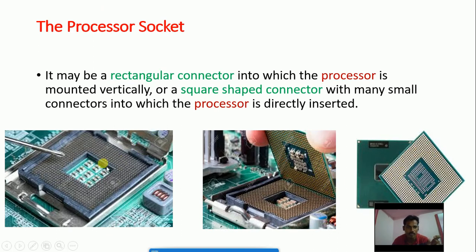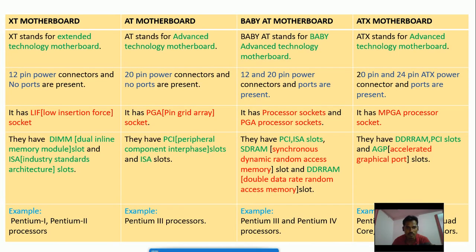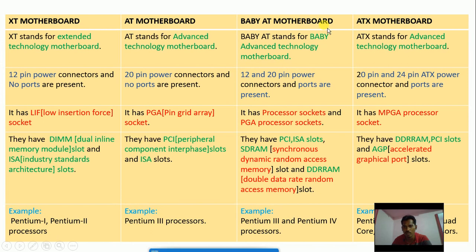The socket is where we place and mount components, and slots are where we insert cards into the PCB. For the AT motherboard, it has a PGA socket - Pin Grid Array socket. The Baby AT motherboard also uses a PGA processor socket. The ATX motherboard uses an mPGA - Micro Pin Grid Array - processor socket.